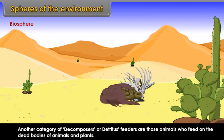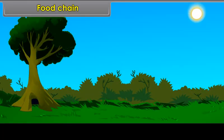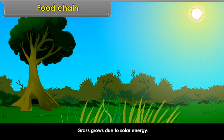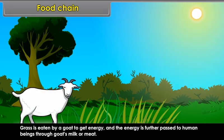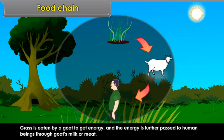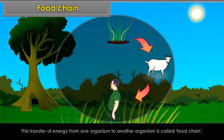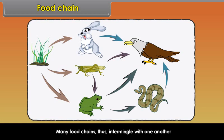Food chain. All forms of life thrive through the grace of the sun's rays. Grass grows due to solar energy. Grass is eaten by a goat to get energy, and the energy is further passed to human beings through goat's milk or meat. Thus, there is a transfer of energy from one organism to another in the form of food. Many food chains intermingle with one another, showing complex relationships of organisms at different levels, forming a food web.